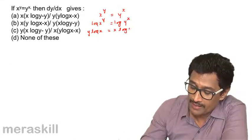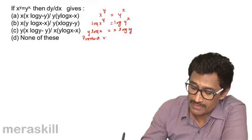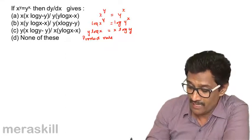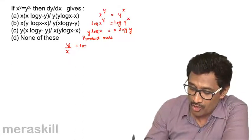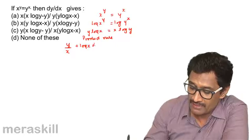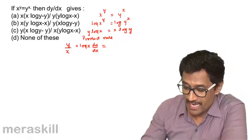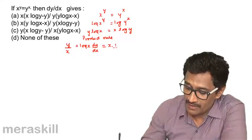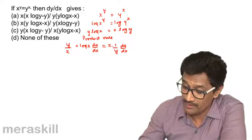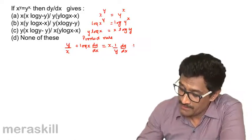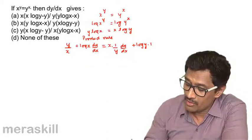Next, we apply the product rule on both sides. On the left side: y times the derivative of log x, which is 1/x, plus log x times dy/dx. On the right side: x times the derivative of log y, which is (1/y)(dy/dx) using the chain rule, plus log y times the derivative of x, which is 1.